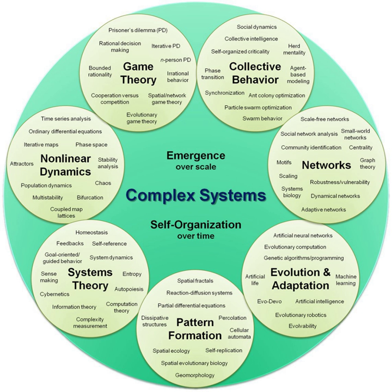Systems that are 'complex' have distinct properties that arise from these relationships, such as nonlinearity, emergence, spontaneous order, adaptation, and feedback loops, among others. Because such systems appear in a wide variety of fields, the commonalities among them have become the topic of their own independent area of research. In many cases it is useful to represent such a system as a network where the nodes represent the components and the links their interactions.